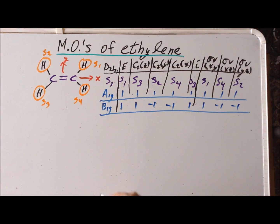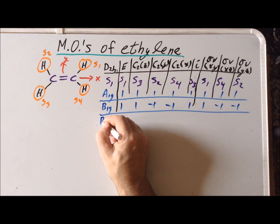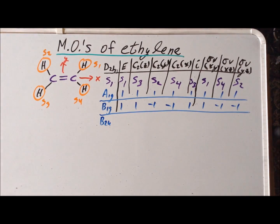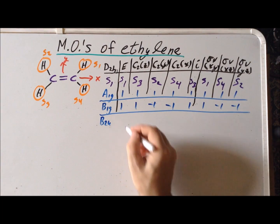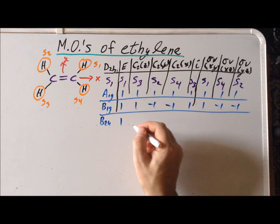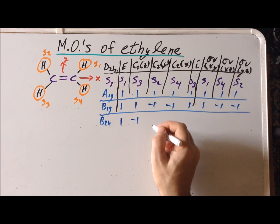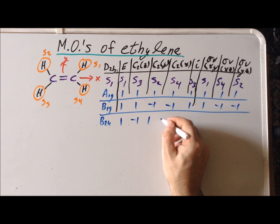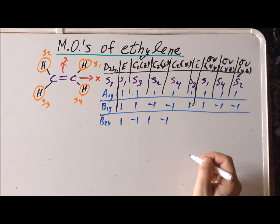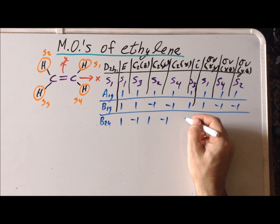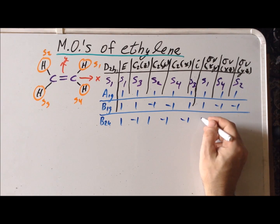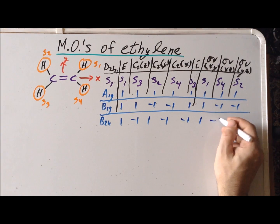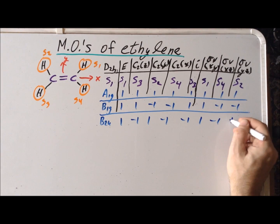For B2u, the characters are +1, −1, +1, −1, −1, +1, −1, +1.